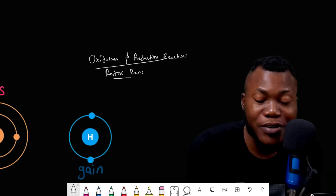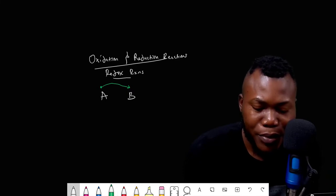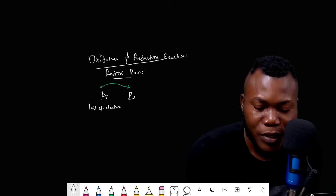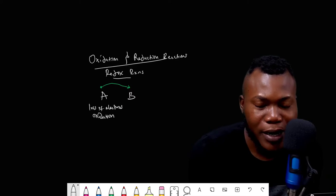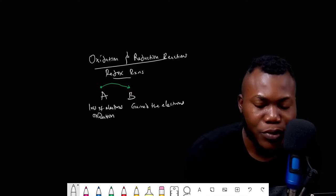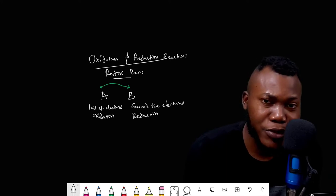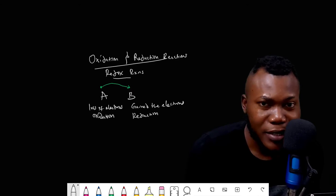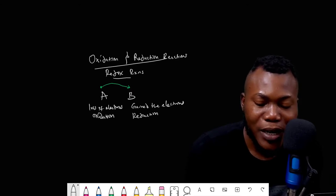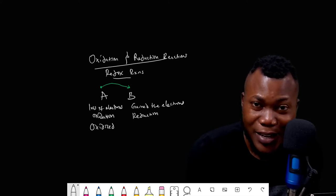If we have two species A and B, and electrons are being lost from A and received at B, then at the point where electrons are lost, oxidation has occurred at A. On the flip side, because B received electrons from A, B has gained electrons — so reduction occurred at B. Oxidation is the loss of electrons, while reduction is the gain of electrons. When A undergoes oxidation, A has been oxidized; when B undergoes reduction, B has been reduced.